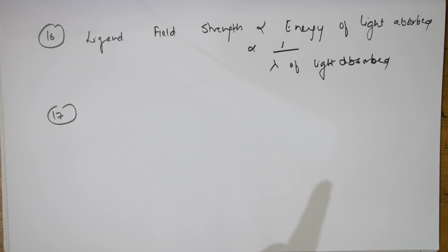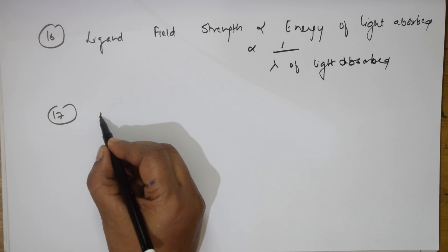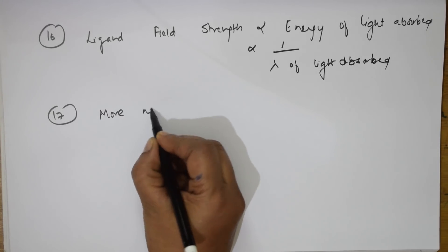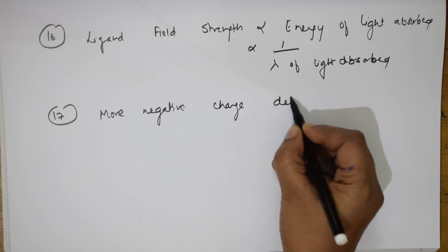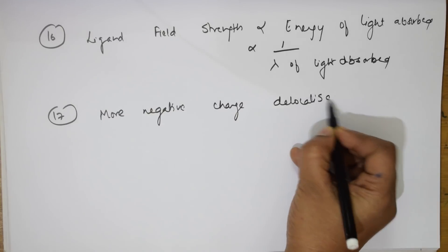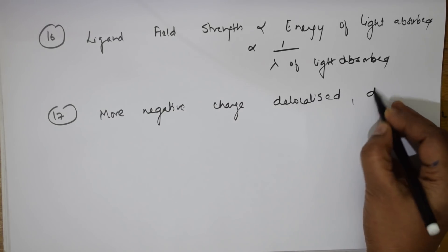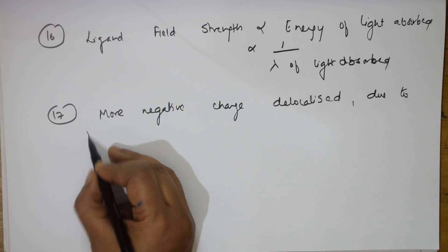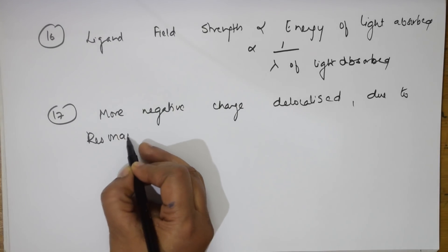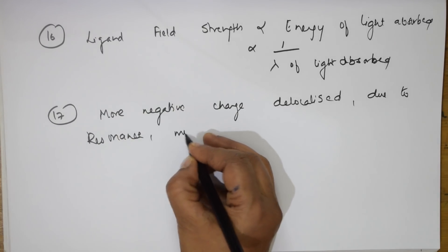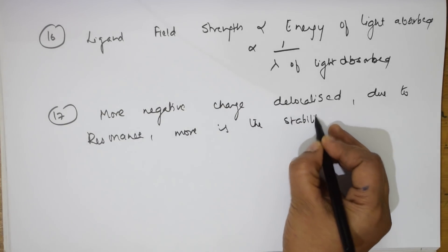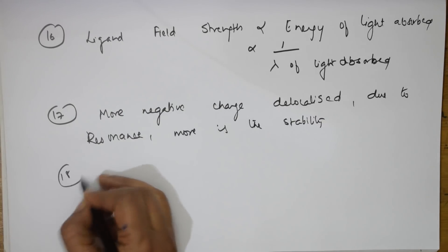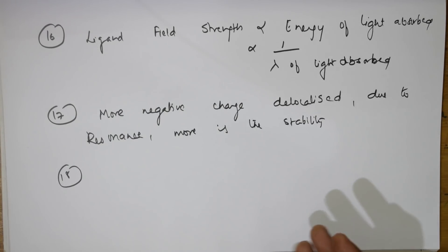The 17th concept: more the negative charge delocalized due to resonance, greater is the stability. If the negative charge is delocalized due to resonance, stability increases.